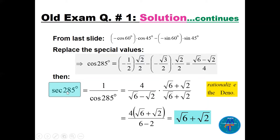Now for secant(285), we take 1 over cosine(285), which is 4 / (√6 − √2). We rationalize by multiplying by (√6 + √2)/(√6 + √2). The denominator becomes 6 − 2 = 4, which cancels with the 4 in the numerator. The final answer is √6 + √2.